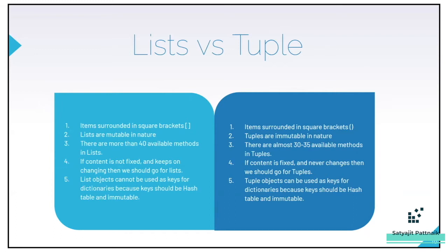An important point: if content is not fixed and keeps changing, we should go for lists. If your content is fixed and never changes, then we should go for tuples. Also, list objects cannot be used as keys for dictionaries, but you can use tuple objects as keys. This is because dictionary keys should be hash-table-compatible and immutable, which lists are not.